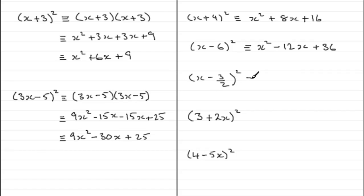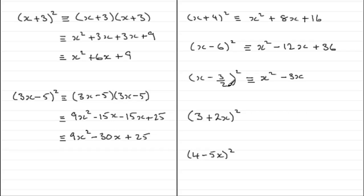For the second one — x minus 3 over 2 all squared — we square the first term to get x squared; the product of x times minus 3 over 2 is minus 3x over 2, doubled gives minus 3x; then we square the last term: squaring a fraction, just square the top and square the bottom, so we get plus 9 over 4.